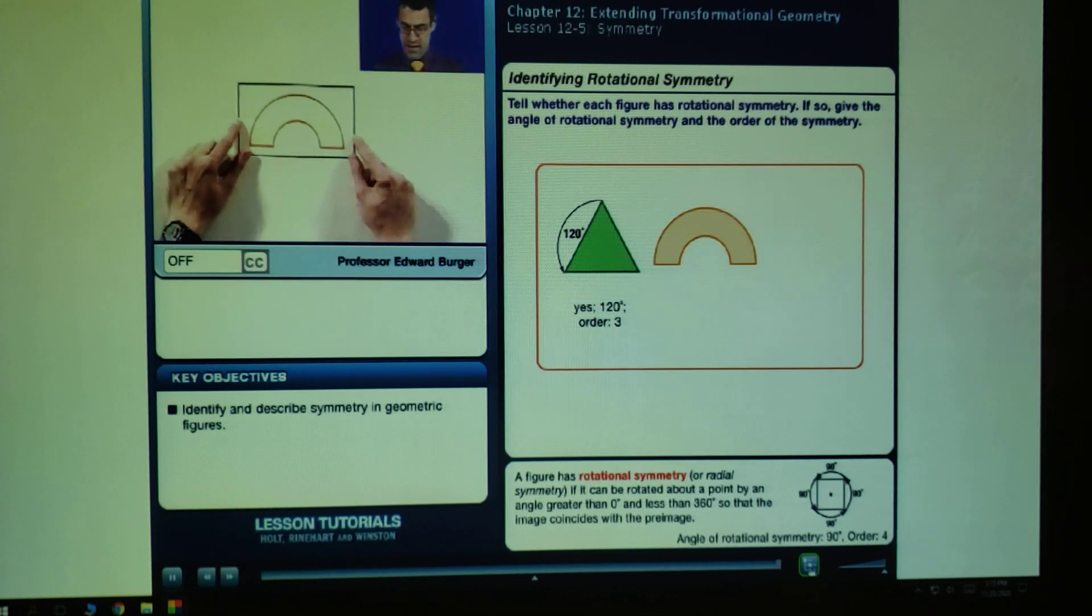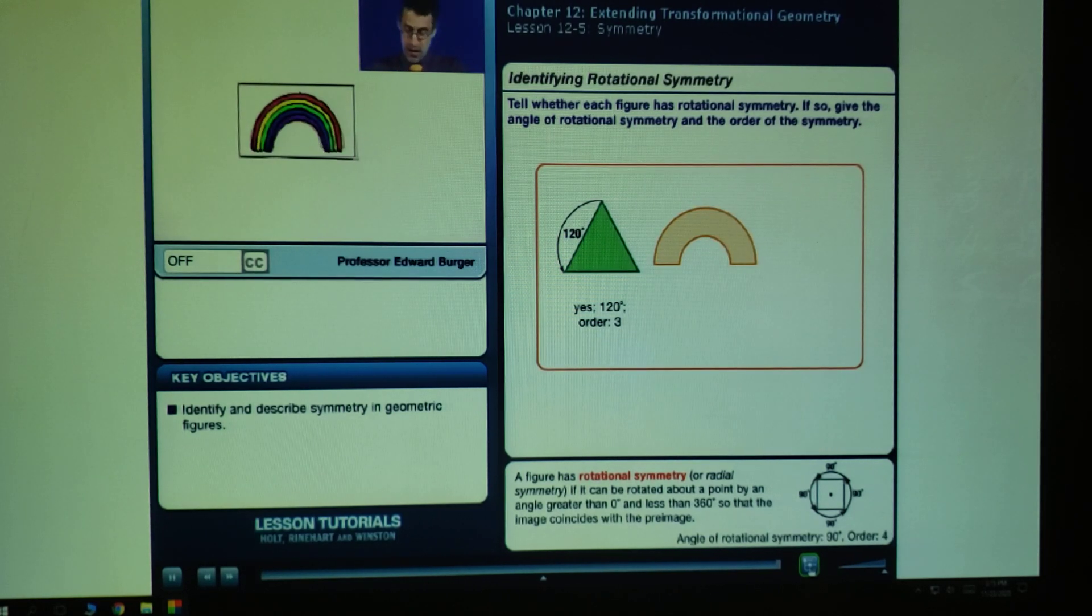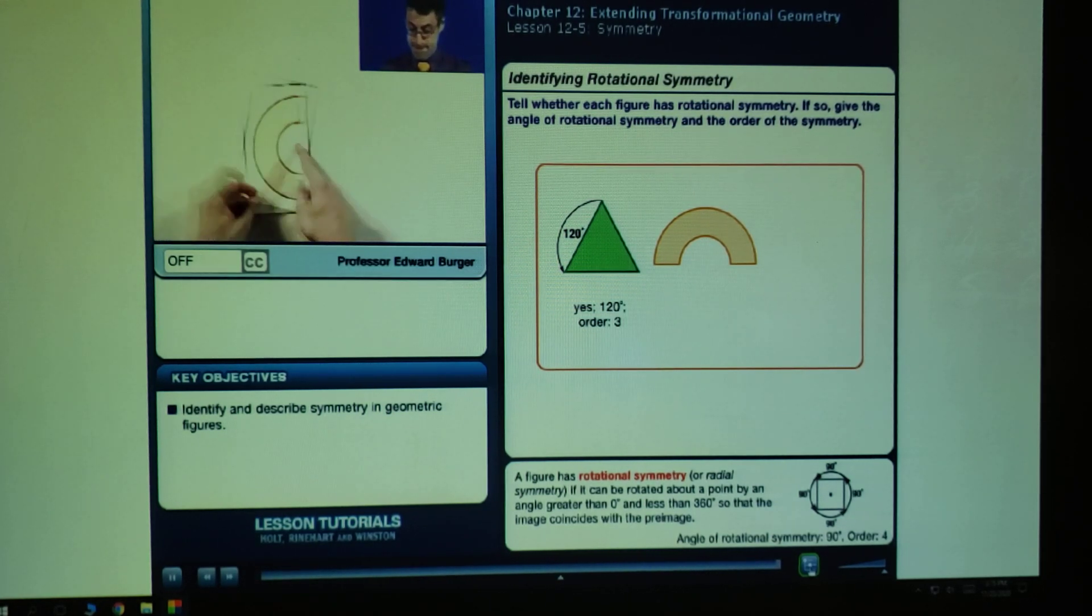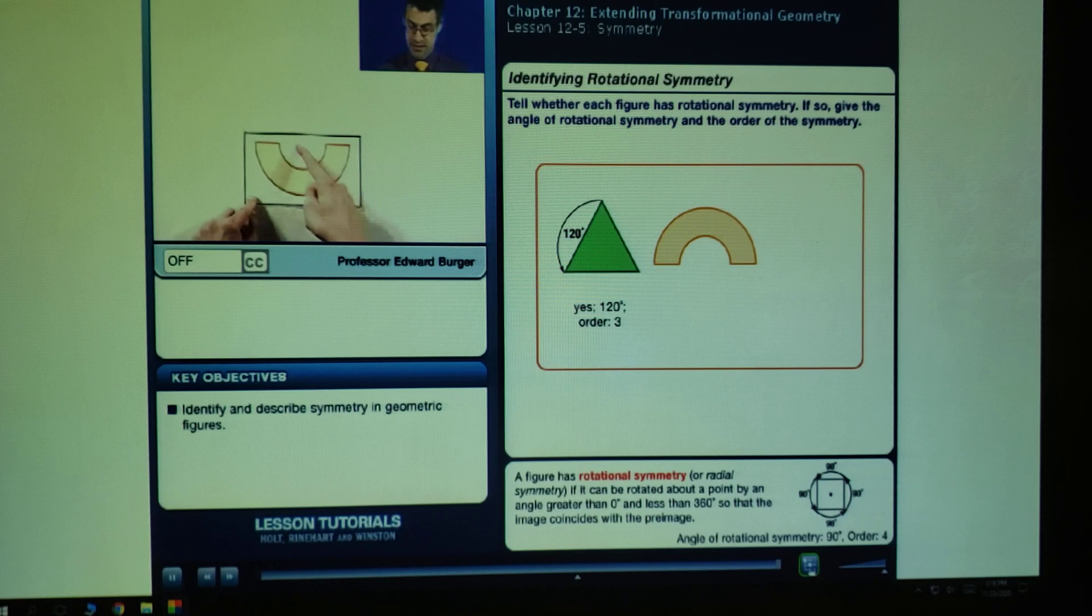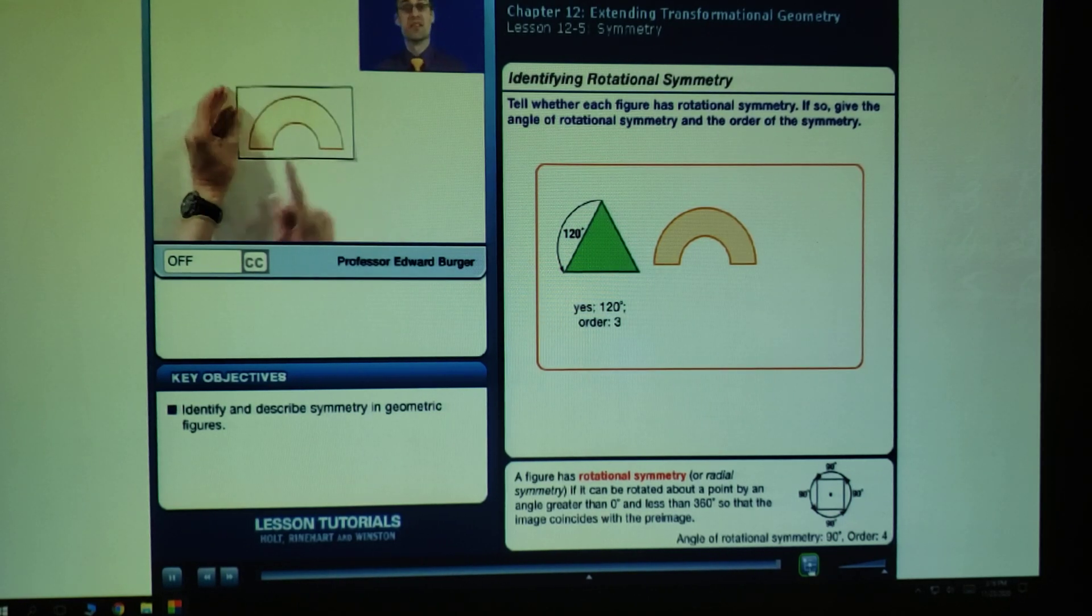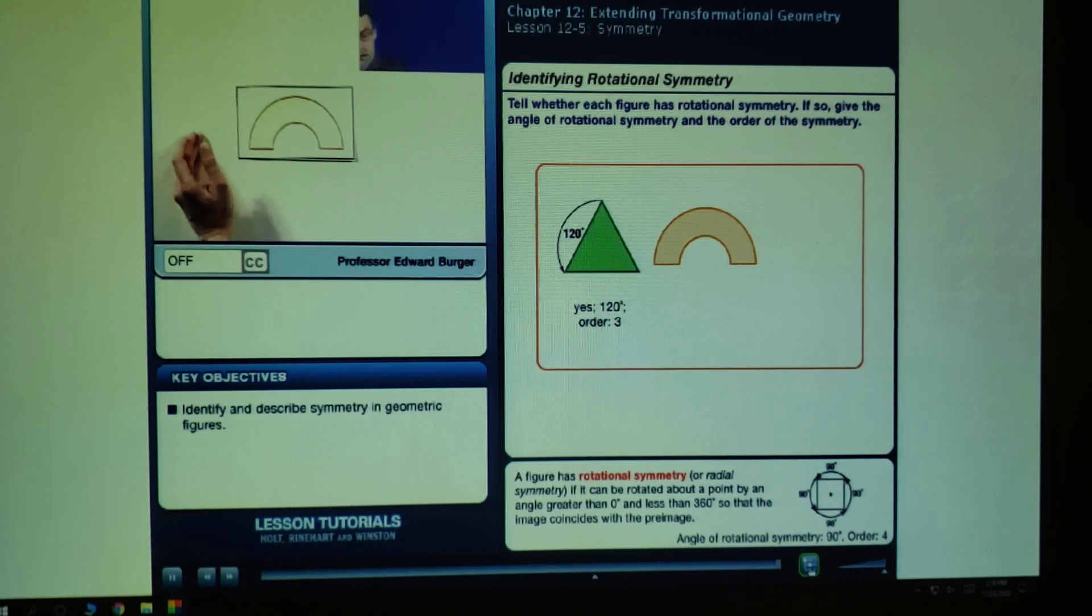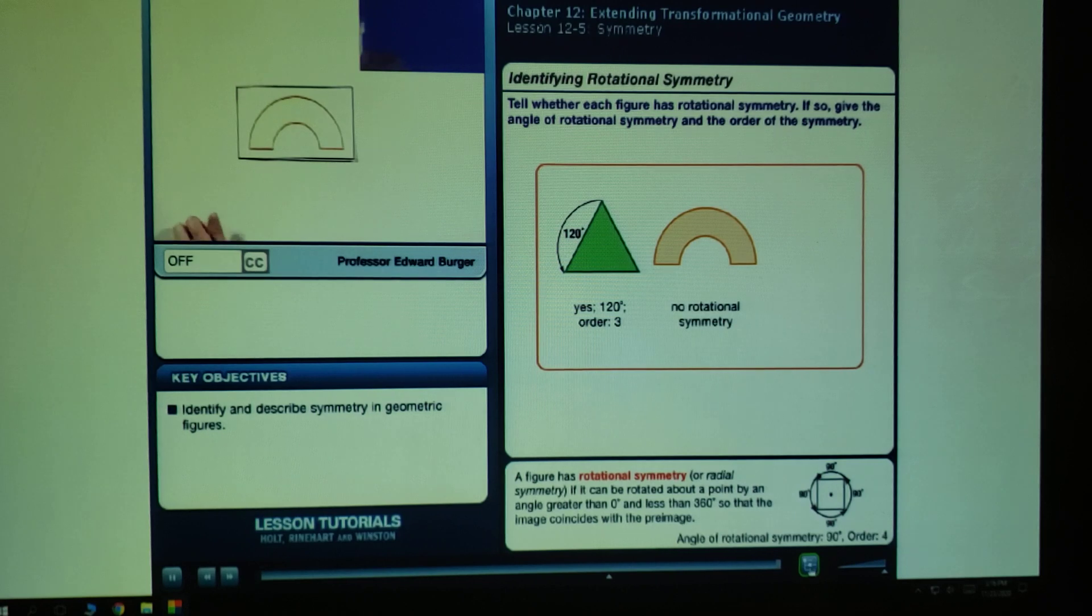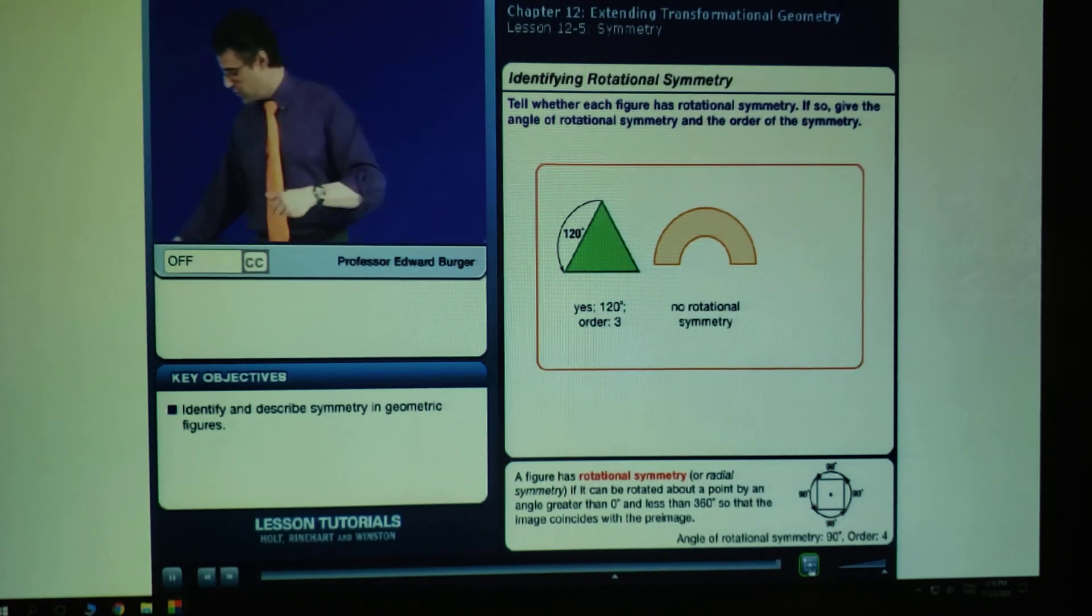How about another example? Kind of like a rainbow-shaped thing. Doesn't have rotational symmetry. Is there a place? That looks good, except that before it was a rainbow, and now it's a happy face. So that's not the same thing. It doesn't coincide with the original. There is no rotational symmetry here. This has line symmetry, not rotational symmetry.